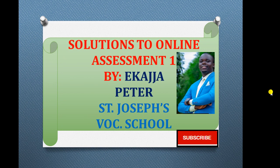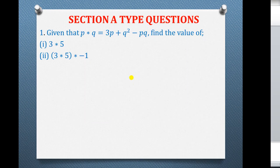Let's go direct and begin with question 1. Question 1 says: given that P operation Q equals 3P plus Q squared minus PQ, find the value of: Roman 1, 3 operation 5; Roman 2, 3 operation 5, operation negative 1. Let's look at the solutions for this.